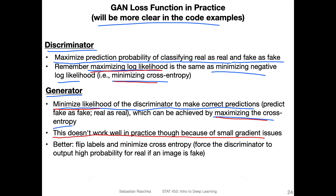In practice, it's even better to just flip the labels and minimize the cross entropy. What we do is force the discriminator to output high probabilities for the real label given that the image is fake — this is the label-flipping trick. The next couple of slides will disentangle this, and then a code example will show it's actually pretty straightforward.